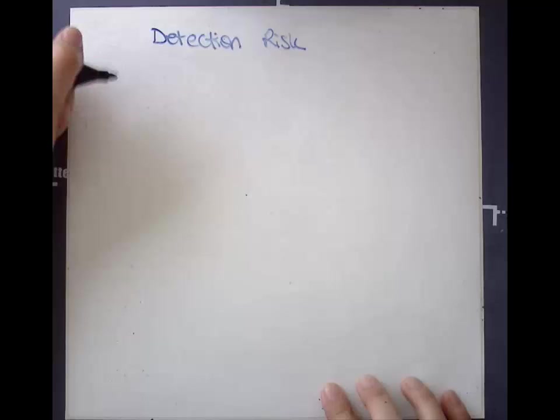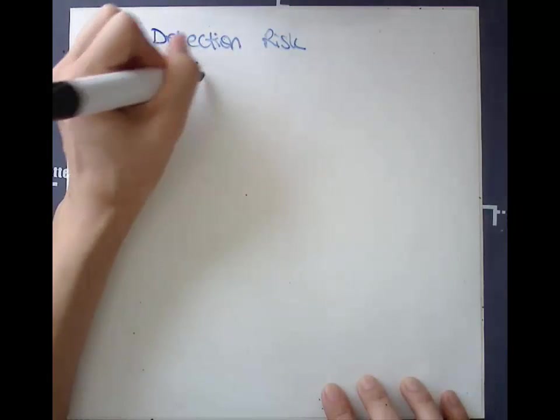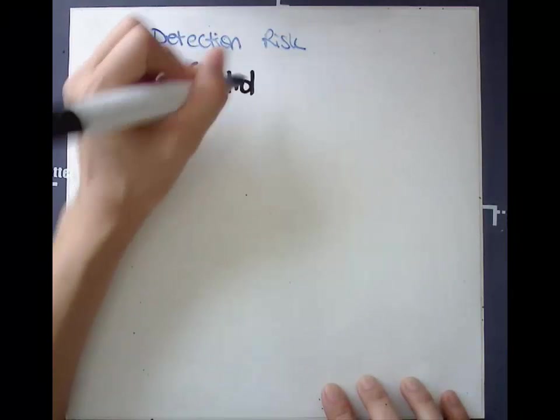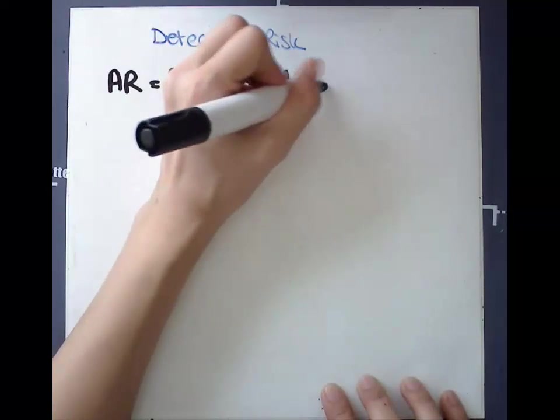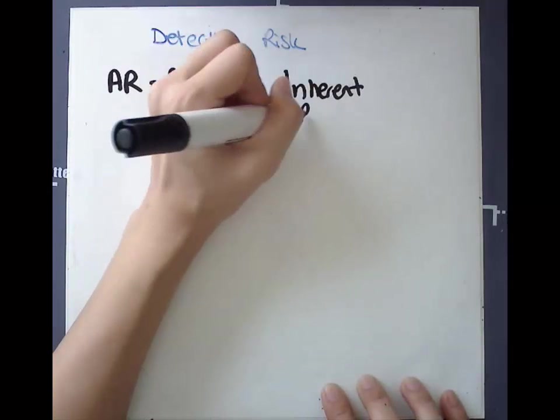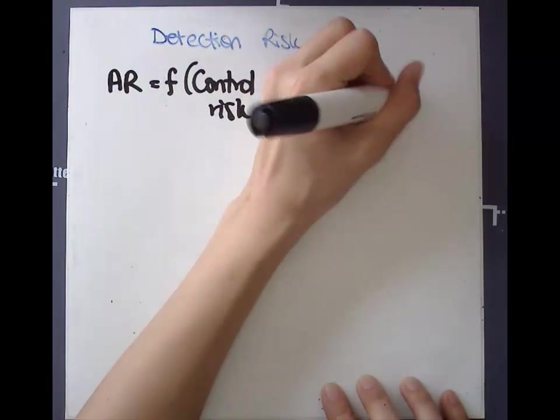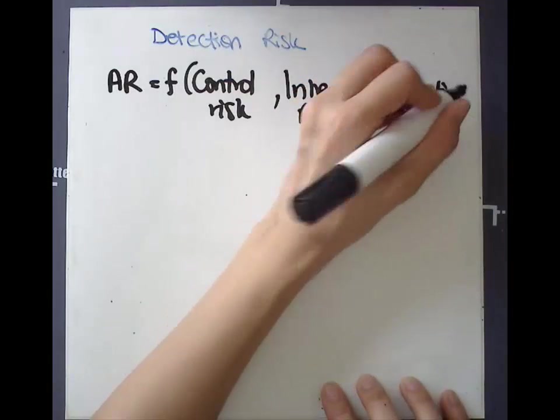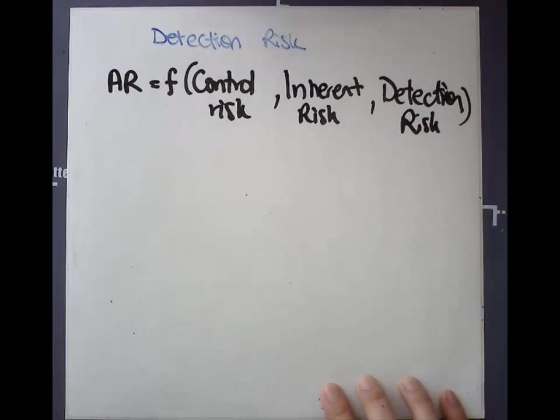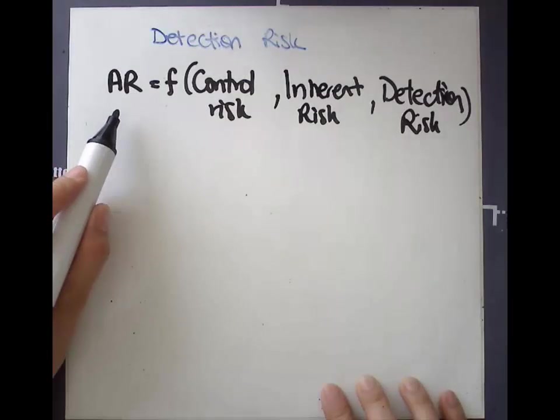So our audit risk model is audit risk is a function of control risk, inherent risk and detection risk. And we usually end up solving for DR because we have the audit risk, generally set it low.